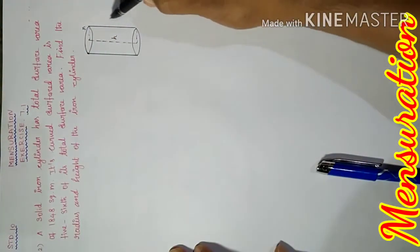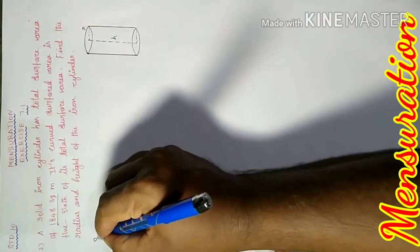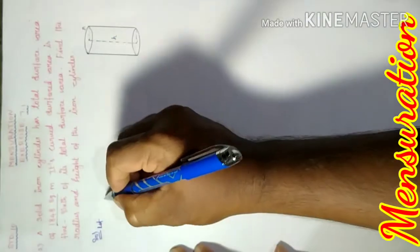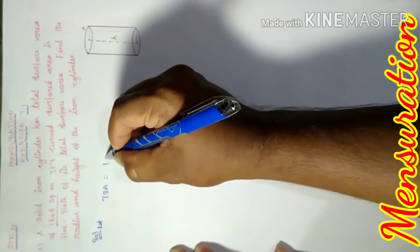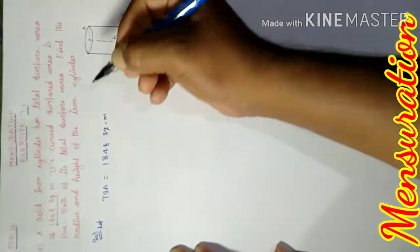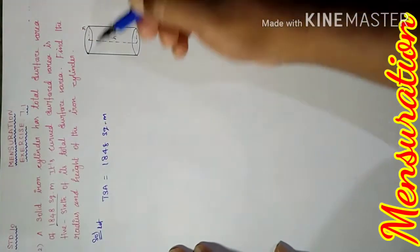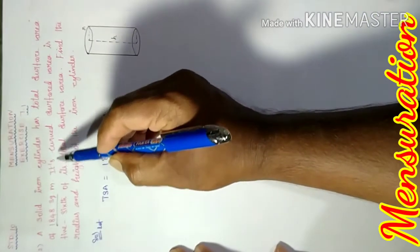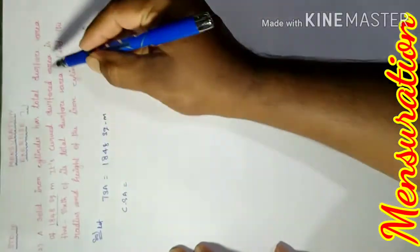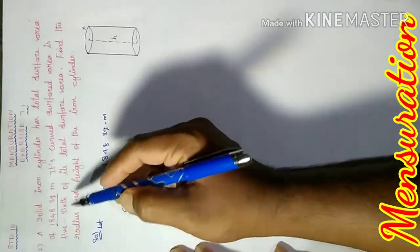Solution. Let the total surface area equal to 1848 square meters. The total surface area value is equal to 1848 square meters. Next condition: the curved surface area CSA is equal to 5/6 of the total surface area of the solid iron cylinder.